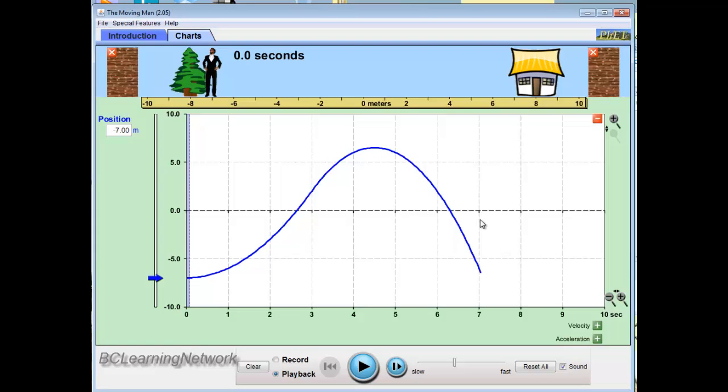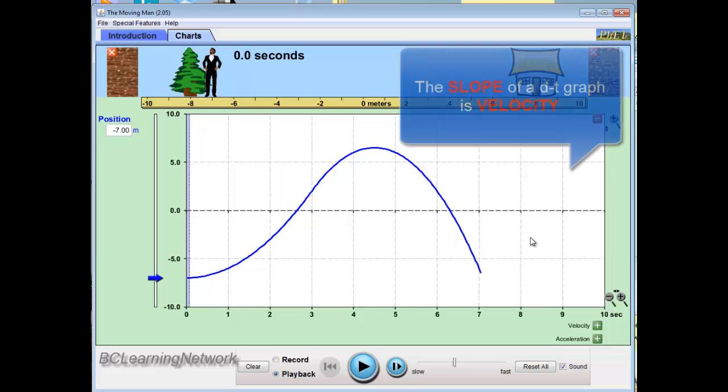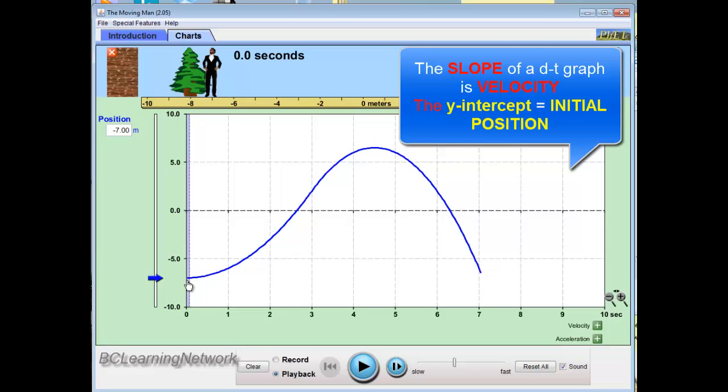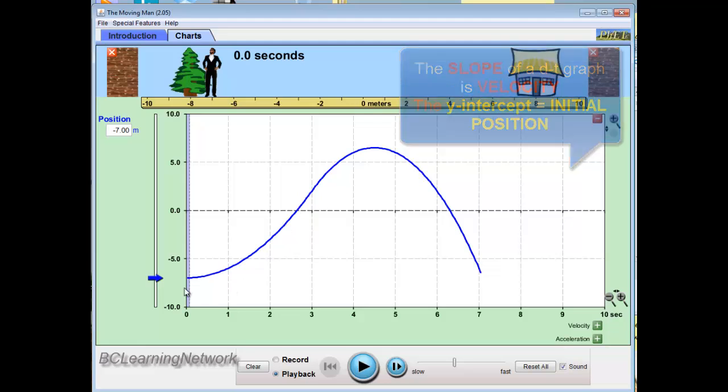The key to analyzing the motion on a position-time graph is the slope. The slope of a DT graph or a position-time graph is velocity, and we want to look at the slope and talk it through to see if we can figure out what's going on with the motion of the man. Let's start with our y-intercept. That's always the starting point. Our y-intercept is at minus seven, so that represents the initial position of the man. The man is starting at the minus seven position on our number line.